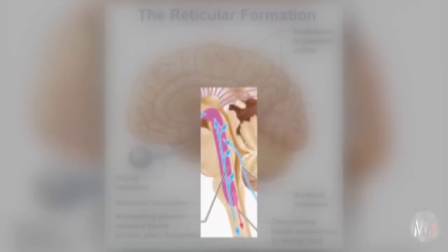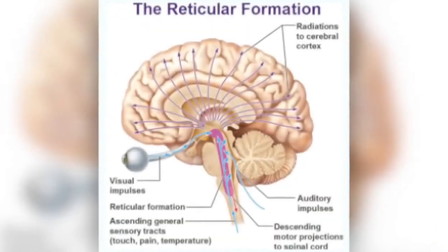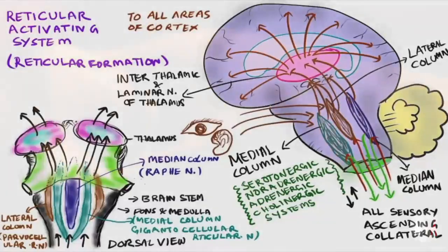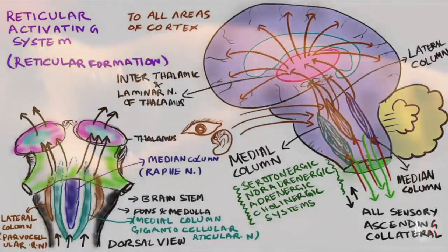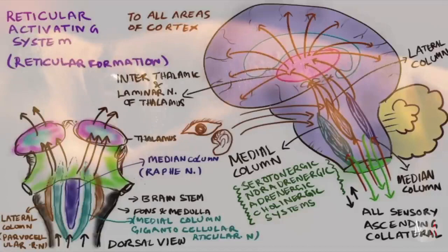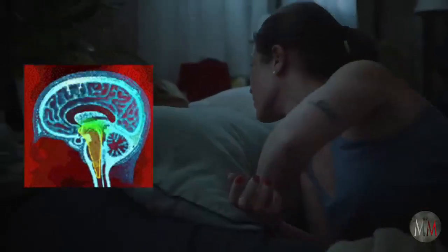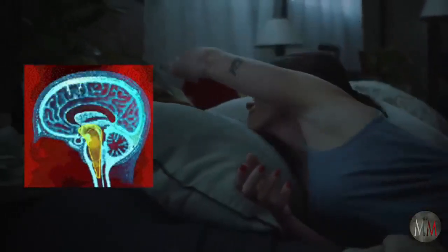It's the job of the reticular formation to constantly edit information going from the brain to the body as well as from the body to the brain. This formation is part of a system called the reticular activating system, which is responsible for levels of wakefulness. For instance, when you wake up from a deep sleep because you hear a sound in your house, it's the RAS that alerts you and arouses you.